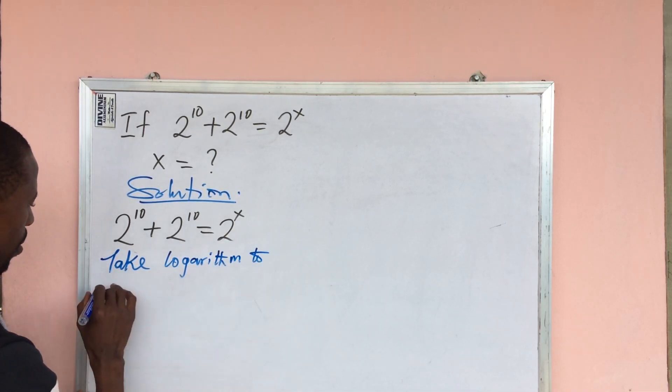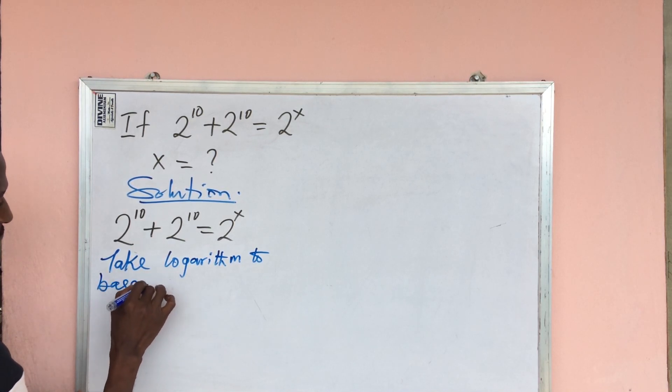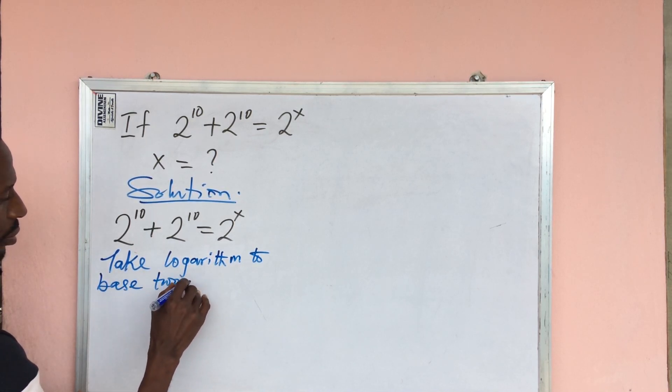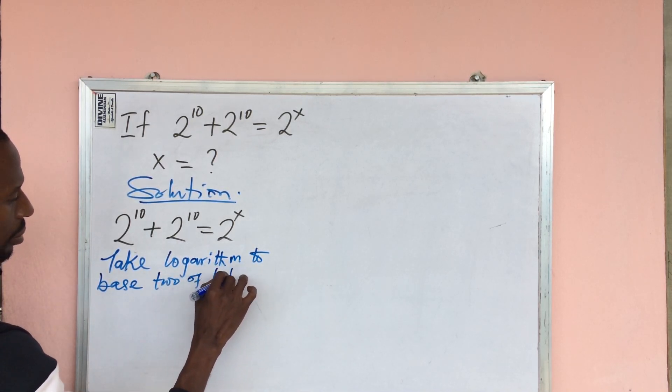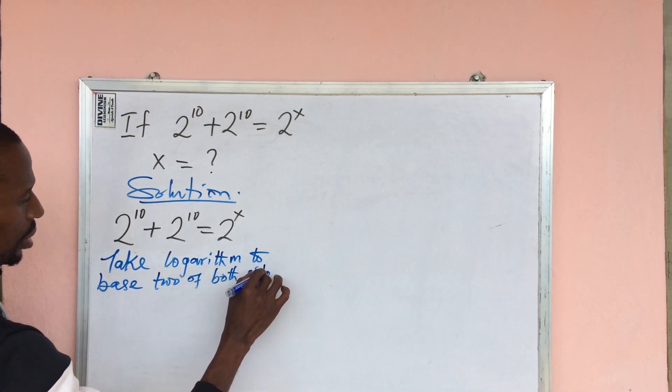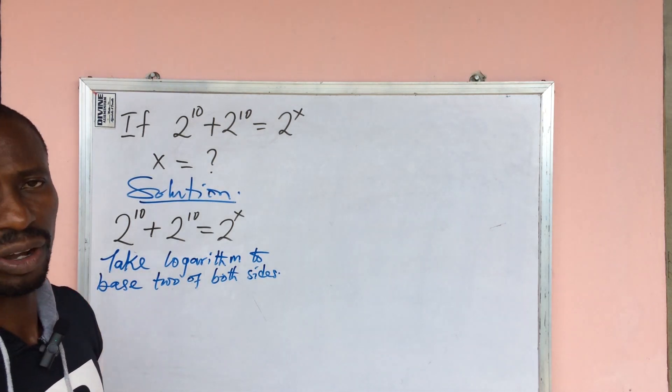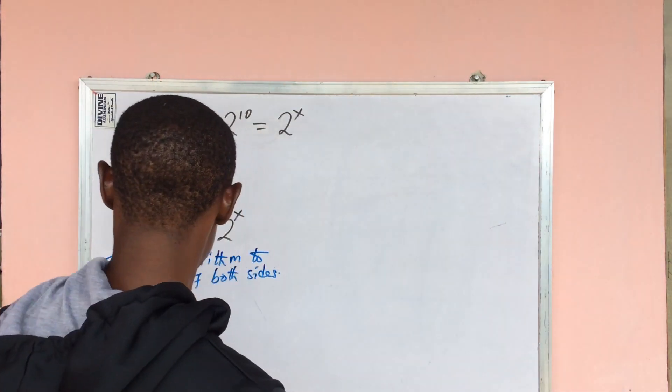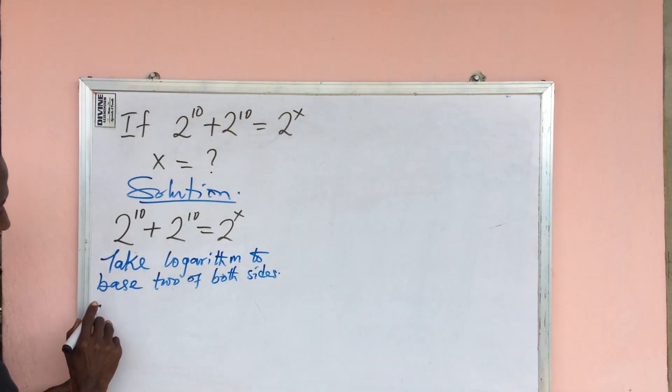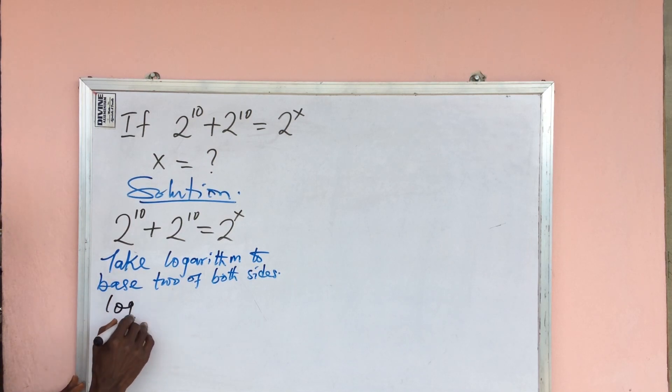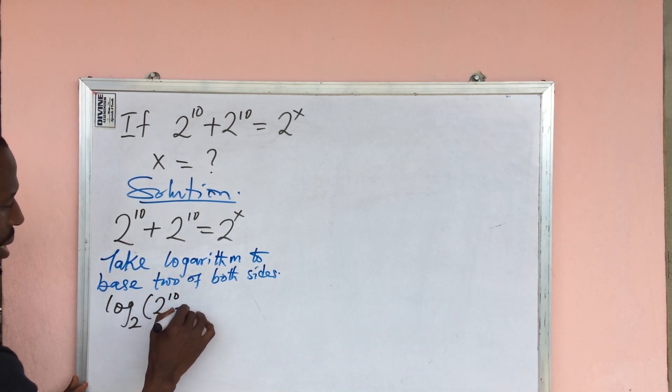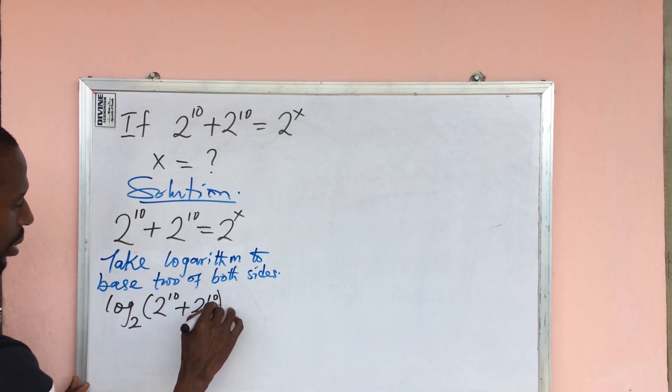So if we take to base 2 of both sides, this will become here we're going to have log base 2 of 2 to the power of 10 plus 2 to the power of 10 equal to log 2 to the power of x base 2. From here we proceed again.